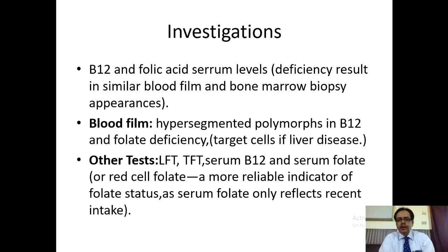But if there is liver disease also, target cells may be found in the circulation because alcohol intake can cause macrocytic anemia. So if alcoholic liver disease is the underlying etiology, then you can find target cells as well. Otherwise, hypersegmented polymorphs is a hallmark feature of vitamin B12 deficiency and folate deficiency.